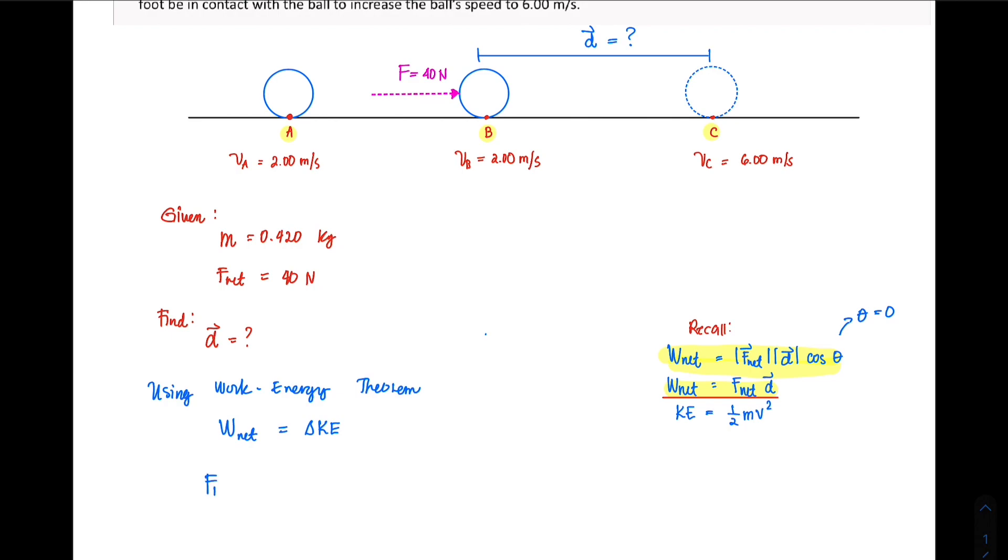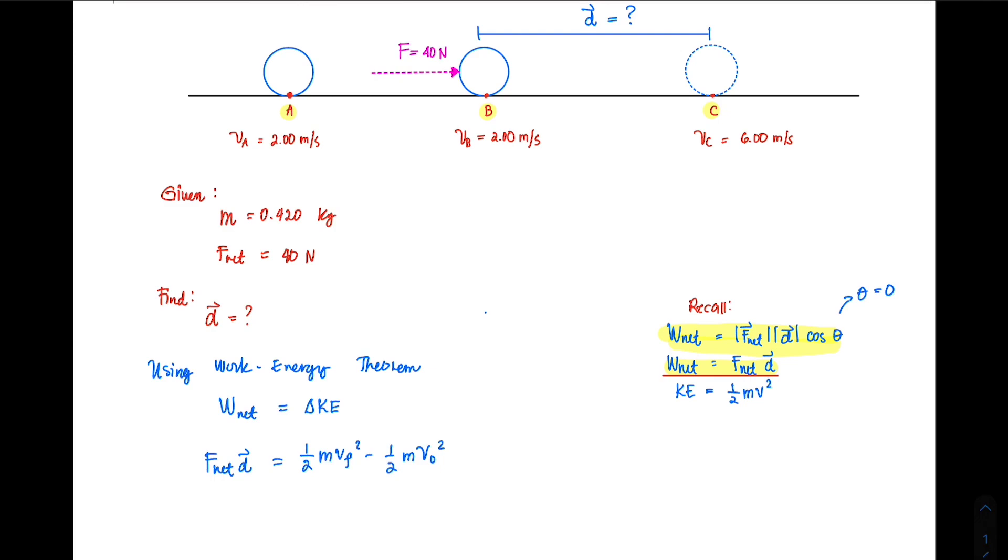That means our left-hand side of the equation could just be expressed as F_net multiplied by the displacement. On the right-hand side, that will be expanded into (1/2)m·v² - (1/2)m·v₀². From there, you notice that we are looking for the variable d.